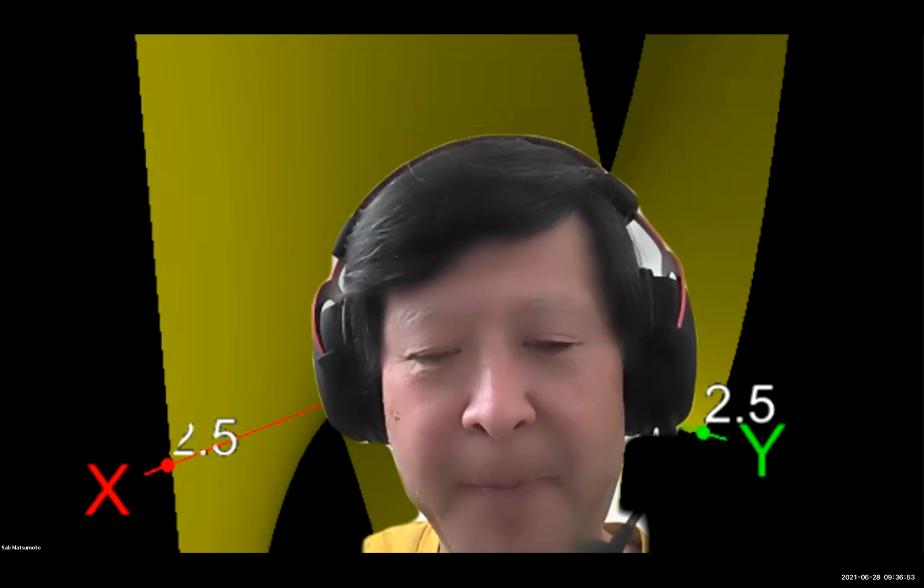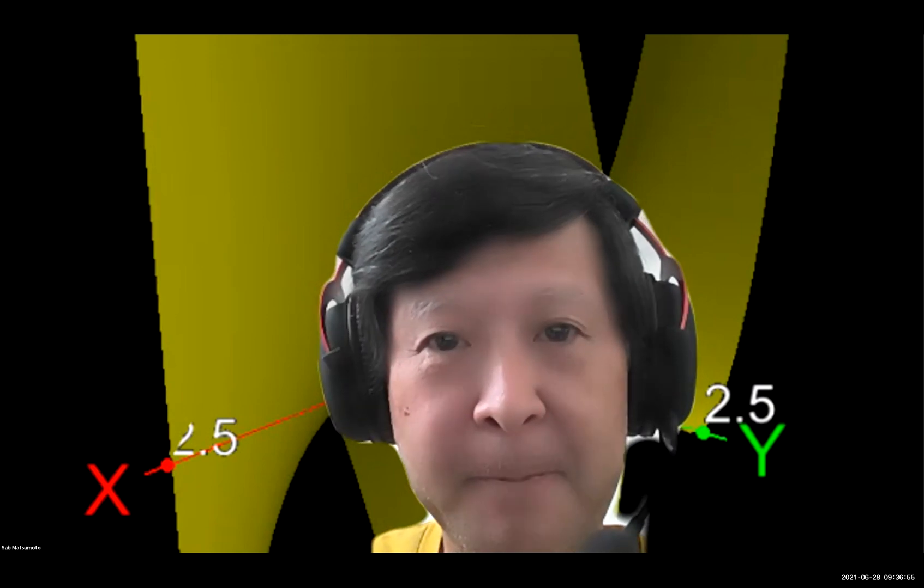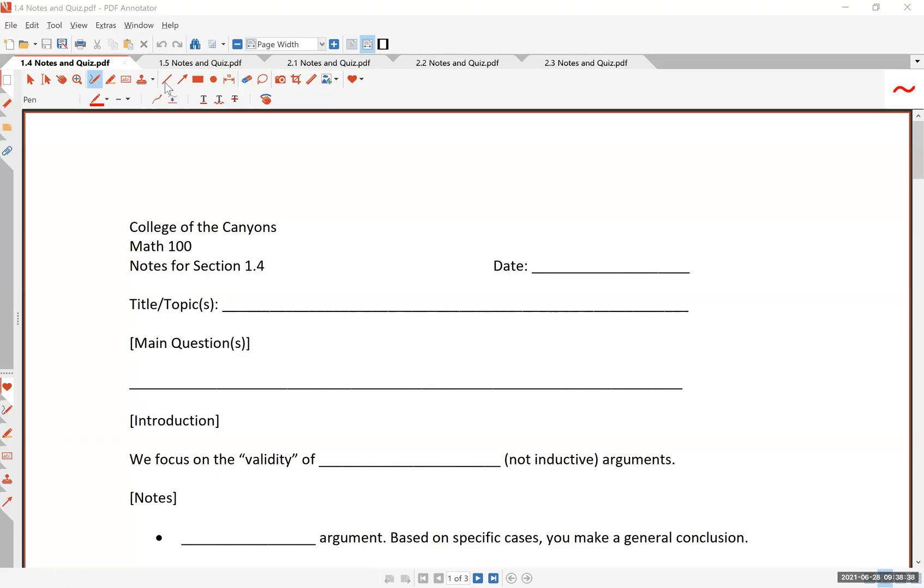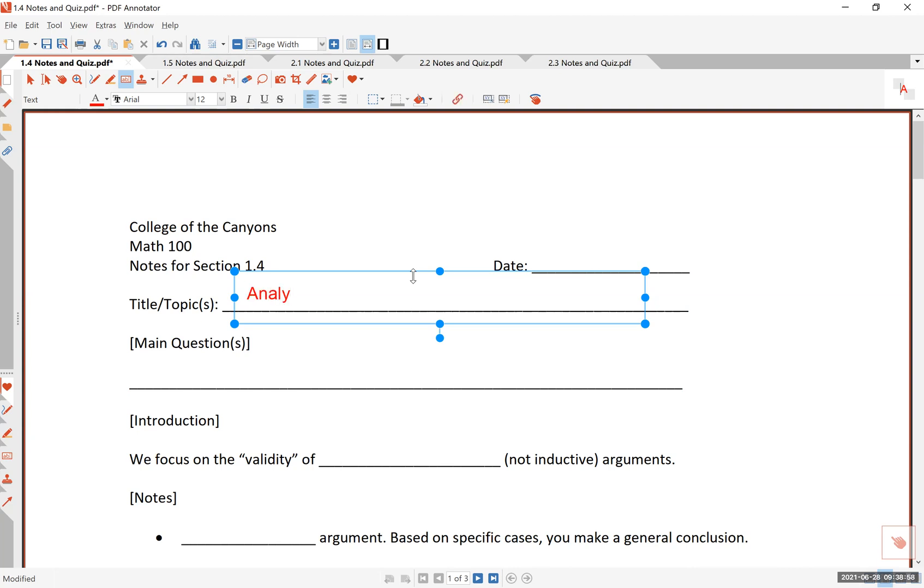Let me share my screen, and we will get going. So section 1.4 is called analyzing arguments. Let's go ahead and start filling in some blanks here. As usual, I will write in red, and I expect that as you watch these videos, you take careful notes. The title of this section is analyzing arguments.